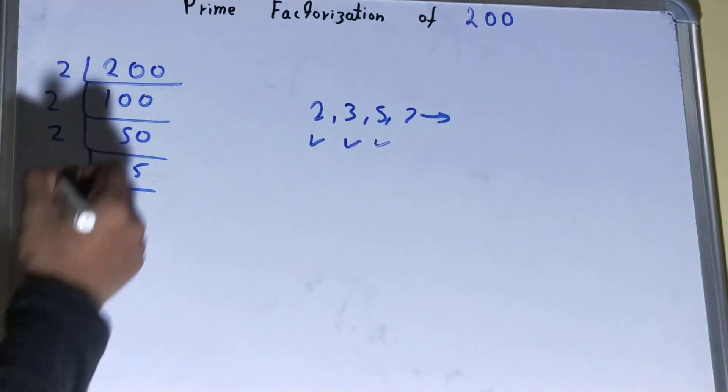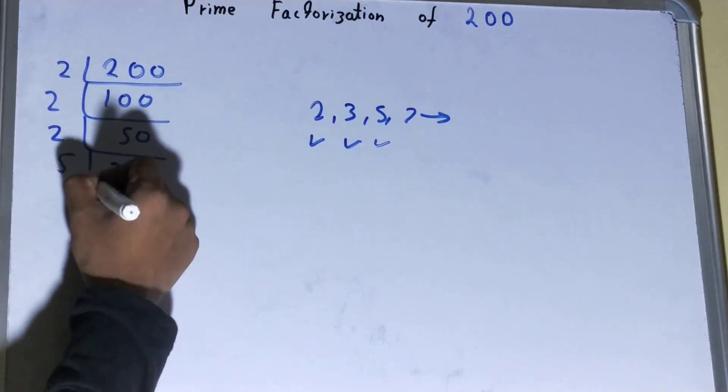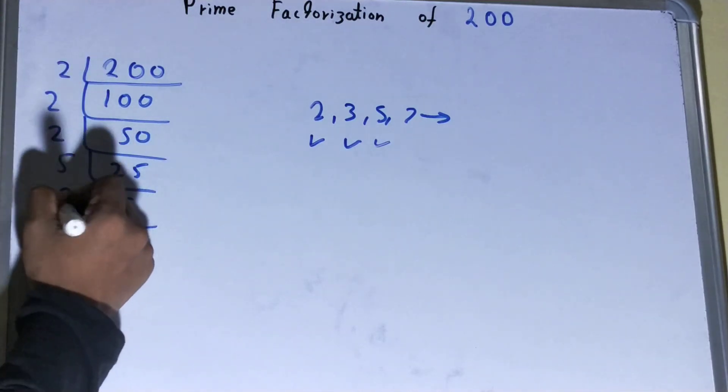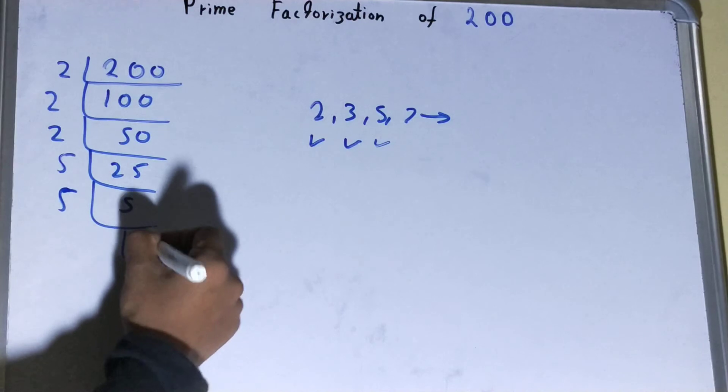Is this 25 divisible by 5? It is, so we'll divide and it is basically 5 times, so we'll have 5. Now again same process with the 5. Is this 5 divisible by 5? It is, and we'll have 1.